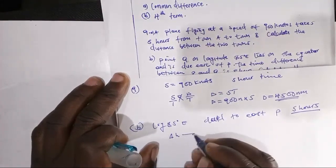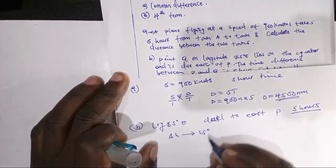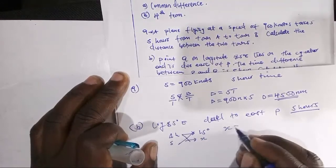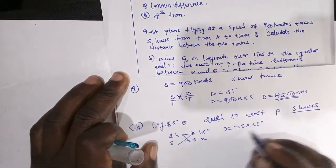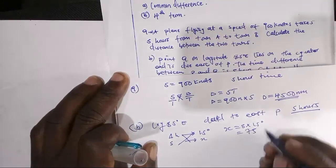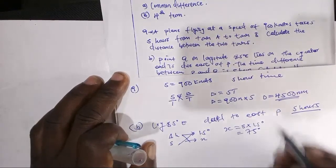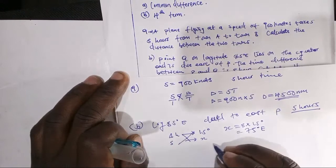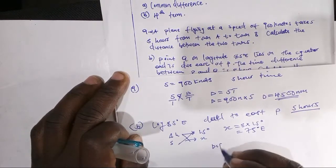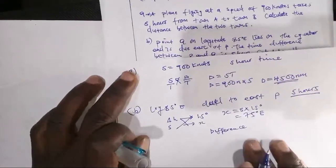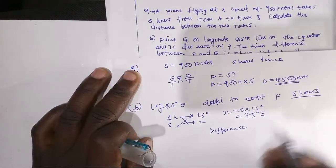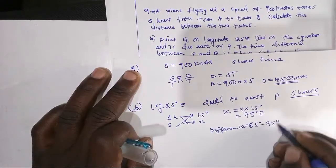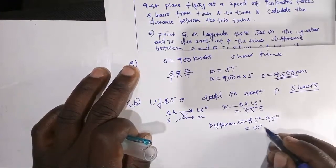We know that 1 hour equals 15 degrees. So for 5 hours, we cross-multiply: X equals 5 times 15 degrees, which is 75 degrees. So Q is 75 degrees east of P. Since Q lies on longitude 85 degrees East, the difference is 85 degrees minus 75 degrees, which equals 10 degrees East. This is our answer for question 9b.